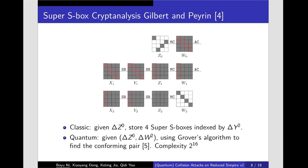In the quantum setting, to apply the nested Grover's algorithm to compute the pair that conforms to the differential from ΔZ_0 to ΔW_2 with an additional time complexity of about 2^16 without QRAM.